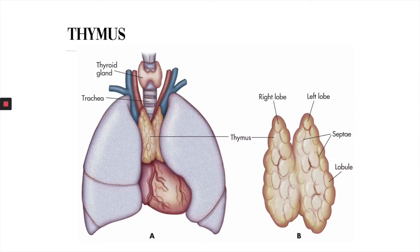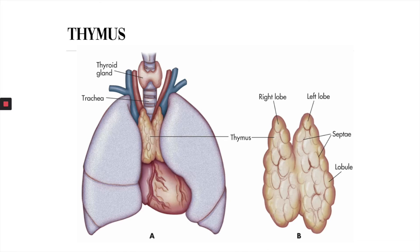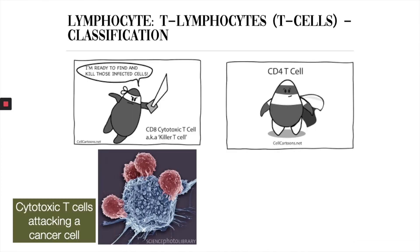The thymus is just above your heart and is about the size of a deck of playing cards. Most T cells are made when you're young, so kids have a bigger thymus than adults. It is also where T cells are screened to get rid of any that would attack the healthy cells in your body.